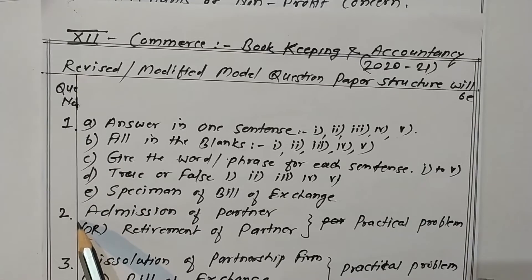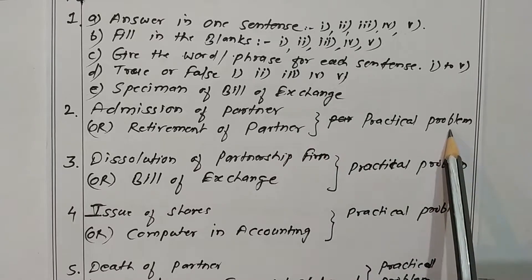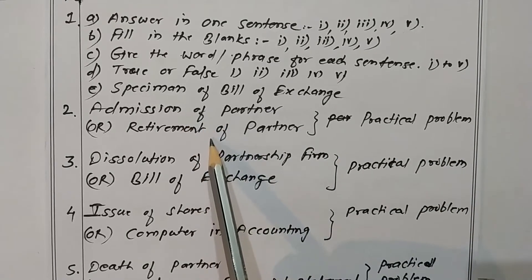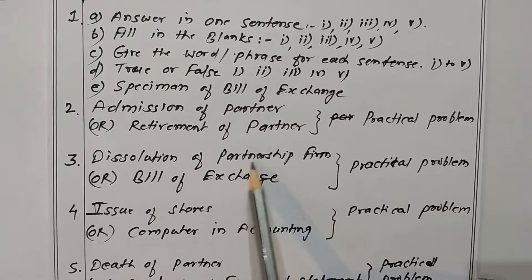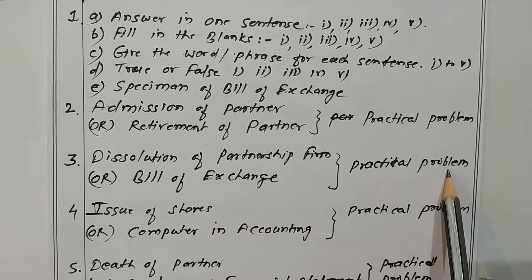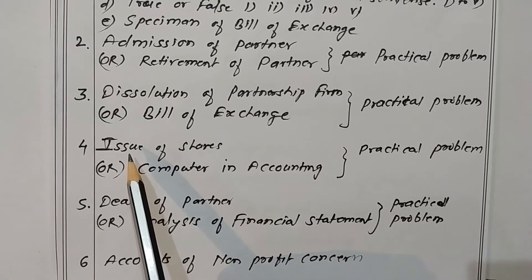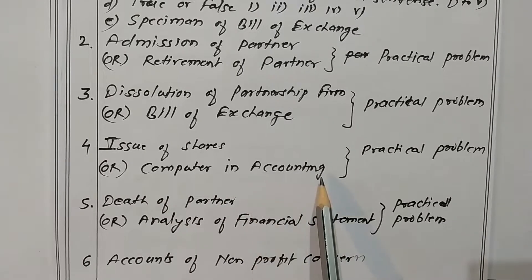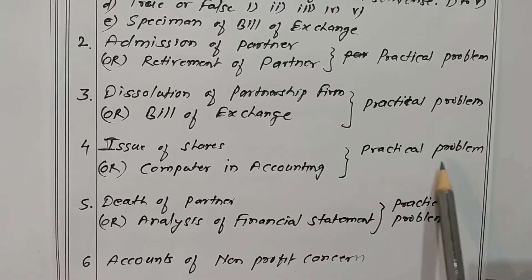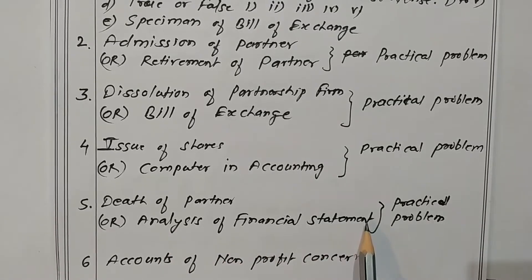Question number two covers admission of partner or retirement of partner — it is a practical problem and one of them is to be solved. Question three covers dissolution of partnership firm or bill of exchange — also a practical problem, one to be solved. Question four covers issue of shares, dissolution of partners, or computer in accounting — practical problem, one to be solved. Question five covers death of partner or analysis of financial statements — also a practical problem, one to be solved.